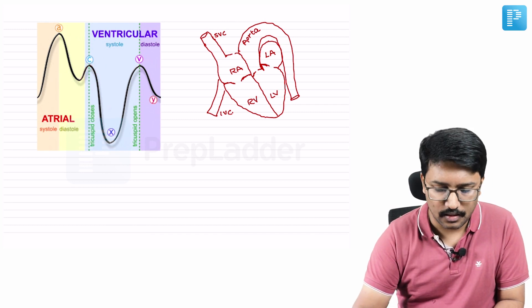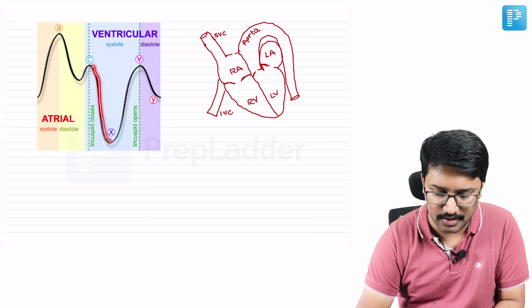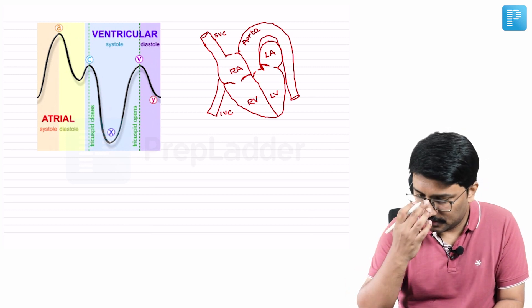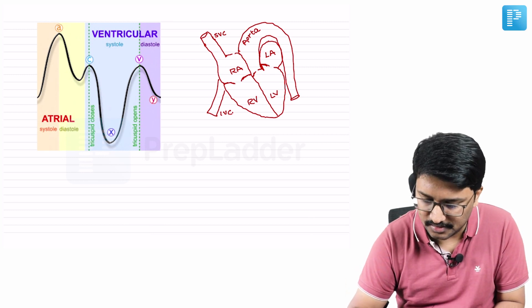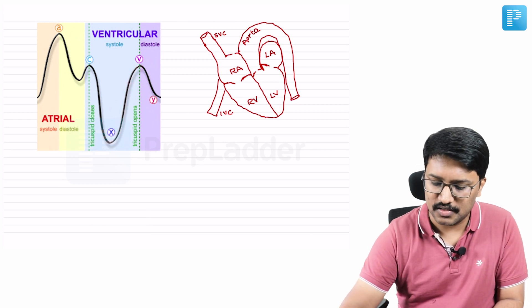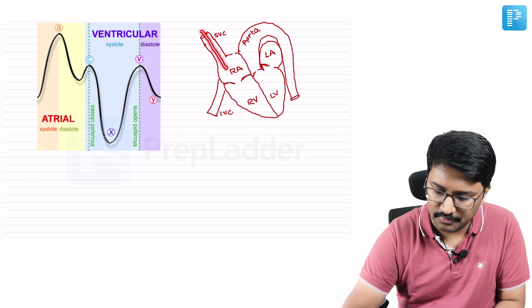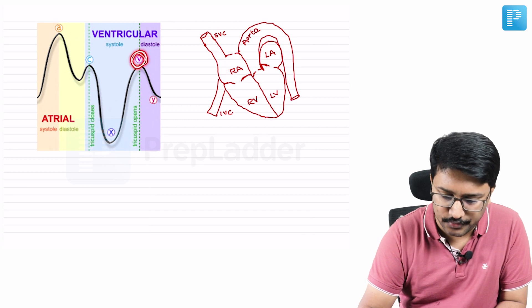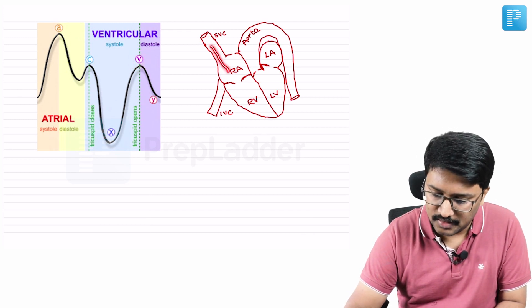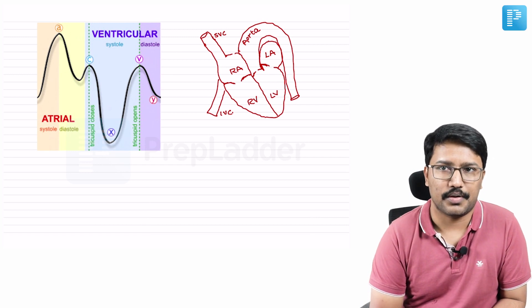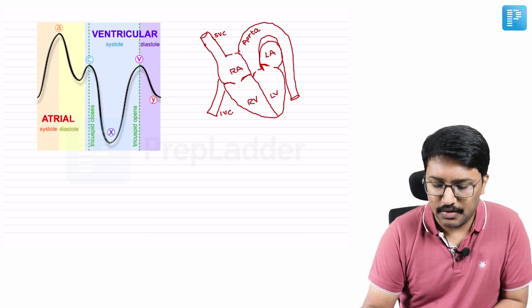After the C wave, the atria continues to relax — giving the X-dash descent. Then another positive upstroke occurs: the V wave, due to filling of the right atrium from the veins — superior and inferior vena cava. V is for venous filling. As blood comes in, pressure inside the right atrium builds up, giving rise to the positive V wave.